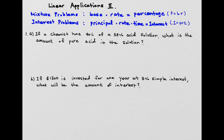So for a simple example: if chemistry had 40 liters of 35% acid solution, what is the amount of pure acid in the solution? We can use this formula. Your pure amount comes from 40 liters — the base amount — times the rate. The rate is 35%, which as a decimal is 0.35. Multiplying those two numbers, you get 14 liters. So your pure amount is 14 liters out of 40 liters.